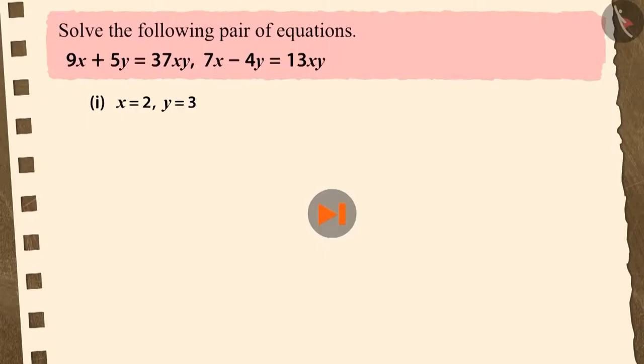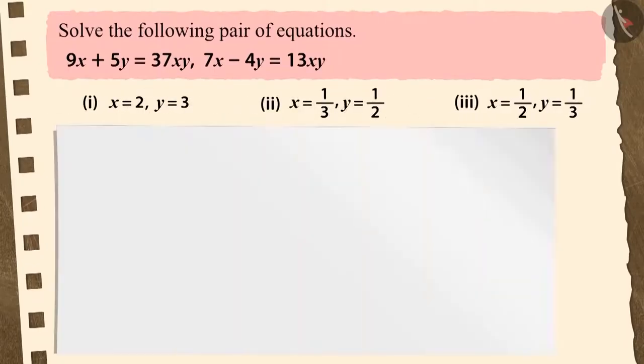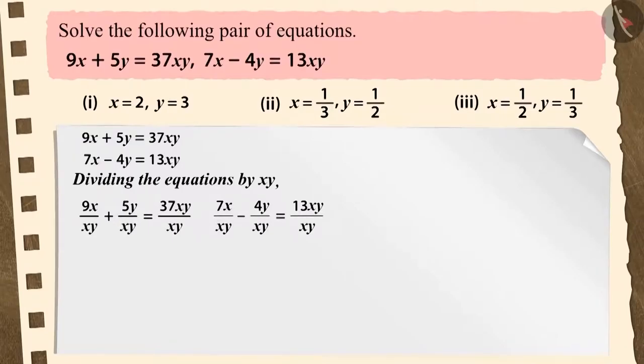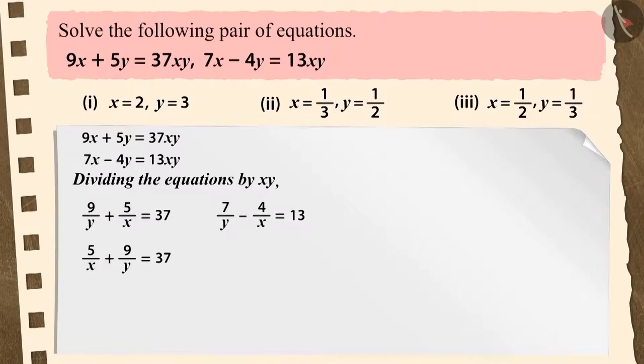To obtain a constant on the RHS, let us divide the equations by xy. This gives us equations 1 and 2.